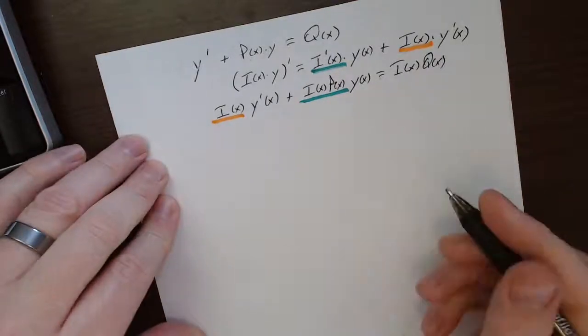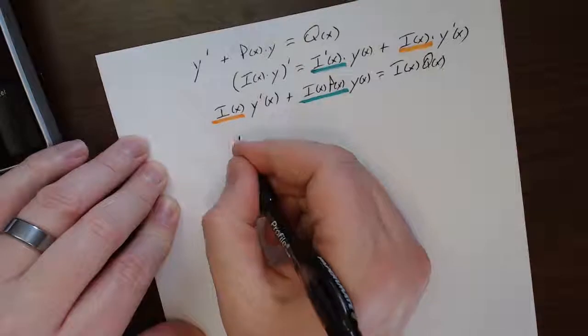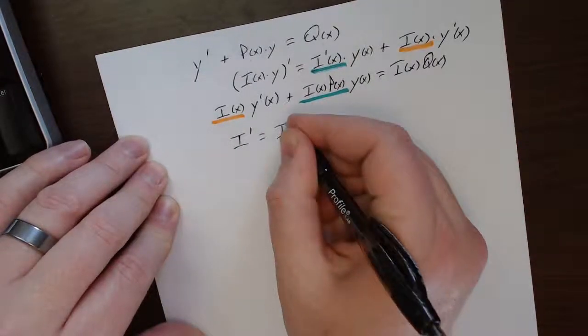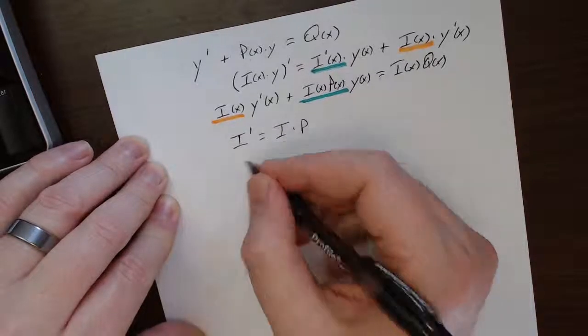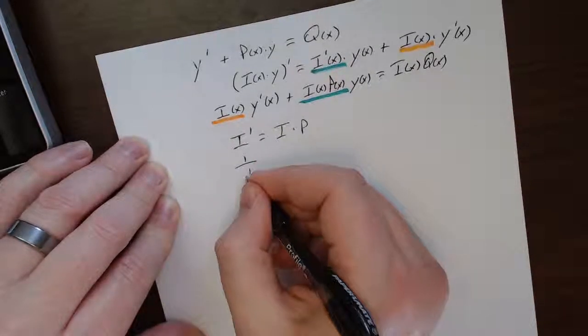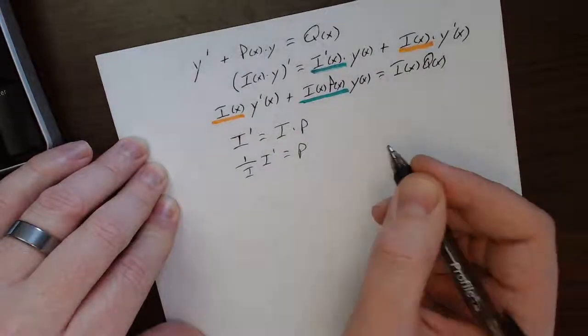So what does i need to be? Well, i needs to be so that these two things are the same thing. Let's check that out. i prime needs to be i times p. Separable! Pulled i over. 1 over i, i prime equals p. Integrate.